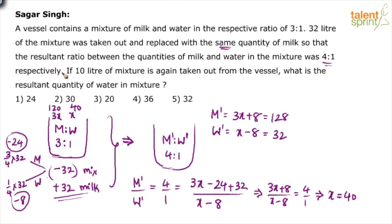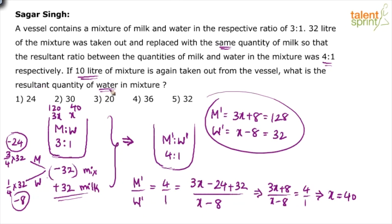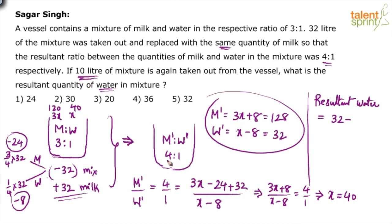We have now reached this point. If 10 liters of this mixture is taken out from the vessel, what is the resultant quantity of water? The water at this point is 32 liters. The ratio is 4 is to 1, so water is 1 part out of every 5 parts — 1 fifth of 10 equals 2 liters removed. So 32 minus 2 = 30 liters will be the answer, which is option 2.